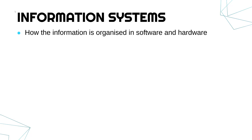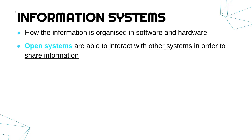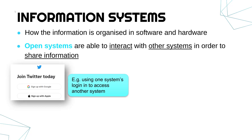There are two types of information systems — two structures that you can have. An open information system is able to interact with other systems in order to share information. If it's open, some information will leave the system and potentially some information will come from another system. Most information systems are open systems.